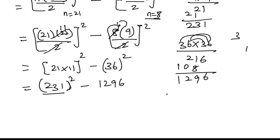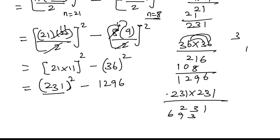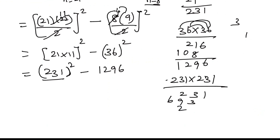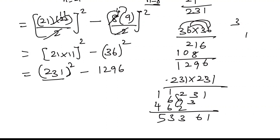Now 231 squared: 231 into 231. 1 one is 1, 1 three is 3, 1 two is 2; 3 one is 3, 3 three is 9, 3 two is 6; 2 one is 2, 2 three is 6, 2 two is 4. Adding: 1; 3 plus 3 is 6; 9 plus 2 is 11; 11 plus 2 is 13, carry 1; 6 plus 1 is 7; 7 plus 6 is 13, carry 1; 4 plus 1 is 5. So 231 squared equals 53,361. Therefore the answer is 53,361 minus 1,296 equals 53,361 — final result is 53,361.